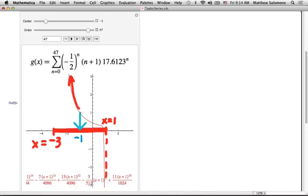So if one of your endpoints is x equals 1, which is a distance of 2 away, then your other endpoint had better also be a distance of 2 away, which in this example puts us at negative 3.